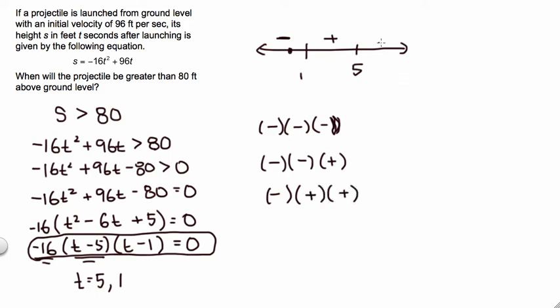So in general, we'll have a negative. We were looking for when it was greater, so we were looking for the positive part. So parentheses here, parentheses here, and everything in between. So when the time is between 1 and 5 seconds, it'll be greater than 80 feet above ground level.